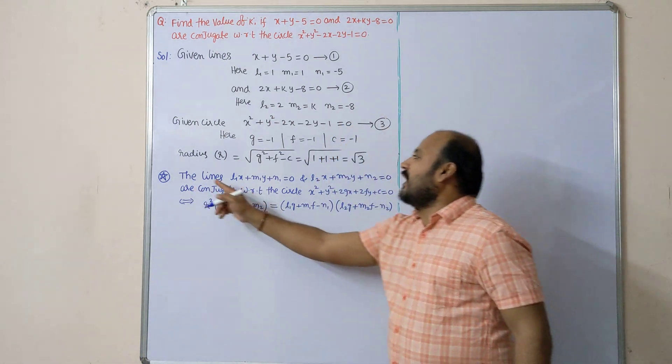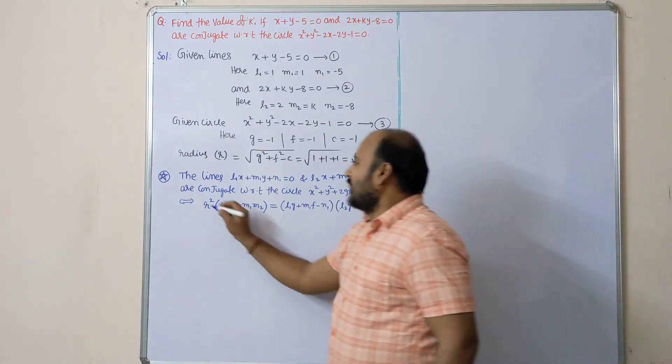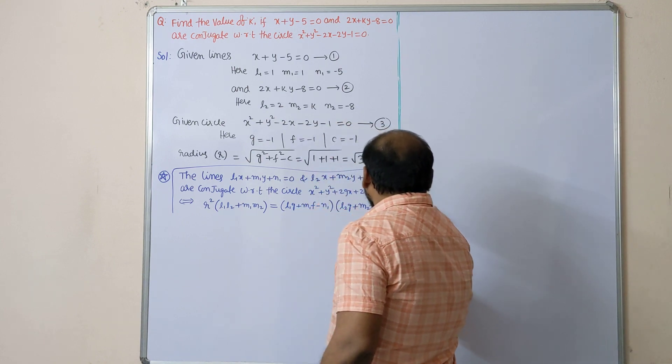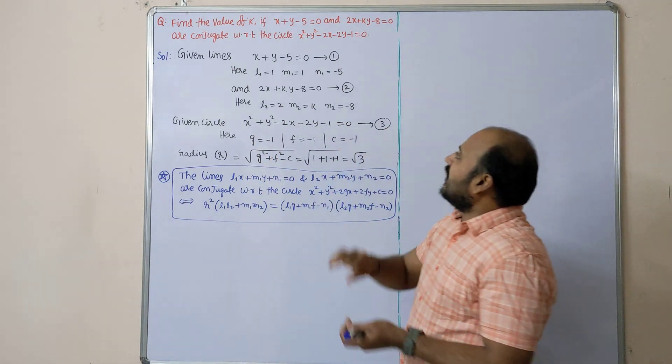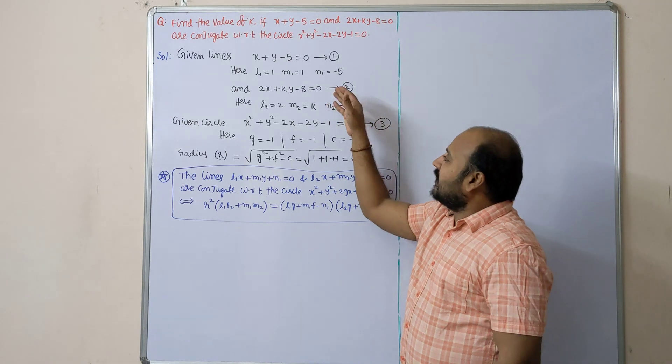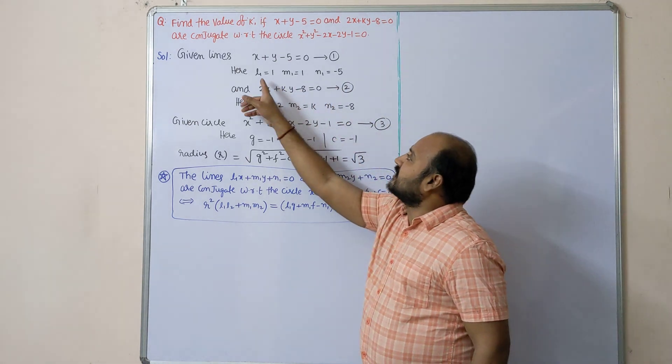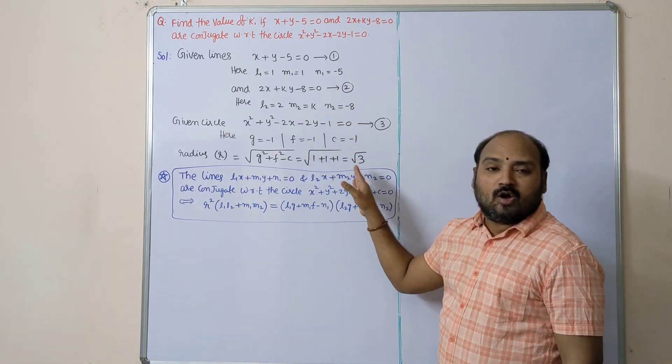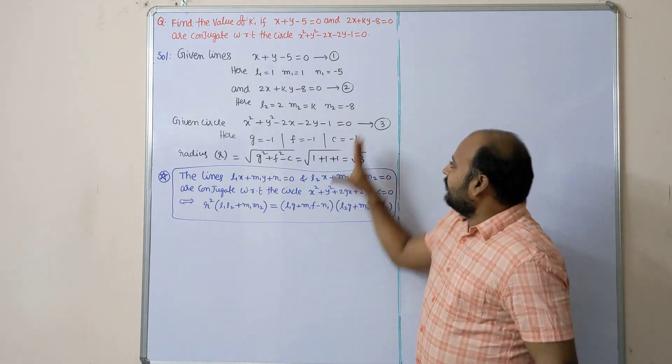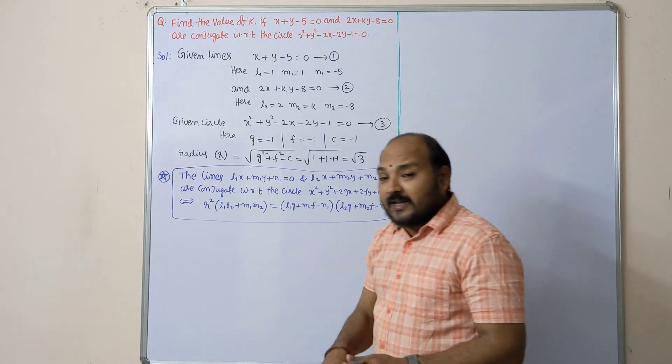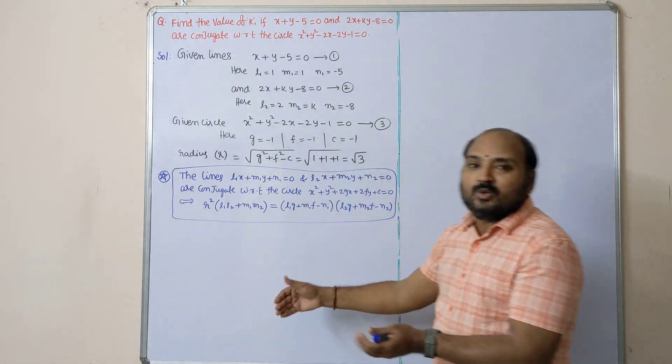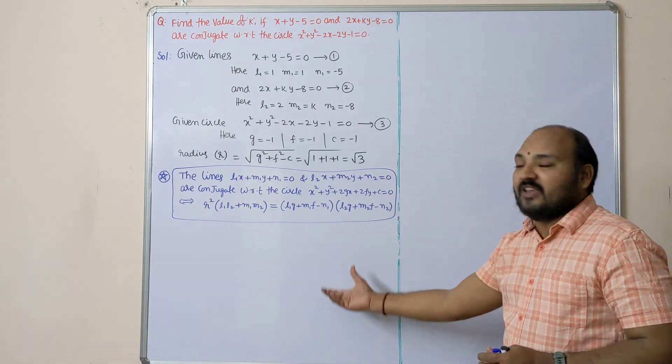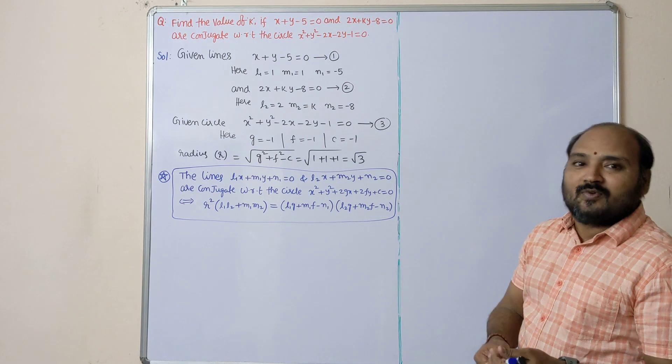Out of 4 marks, if you write this information you will get 1 mark. Surely see how to distribute the marks: for writing given lines, given circle, calculating the respective values l1, m1, n1, l2, m2, n2, g, f, c and r value, and writing this formula, one mark. Applying these values, one mark. Simplification and getting the answer, one mark.